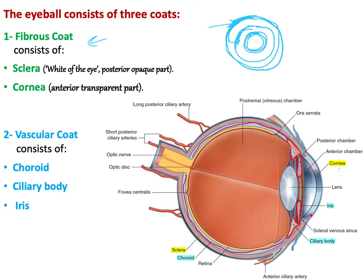The ciliary body continues anteriorly to form the iris, which gives your eyes their color — some people have green, blue, or black eyes. The iris is not fused anteriorly; there is a hole called the pupil. That completes the vascular coat: choroid, then ciliary body, then iris anteriorly.